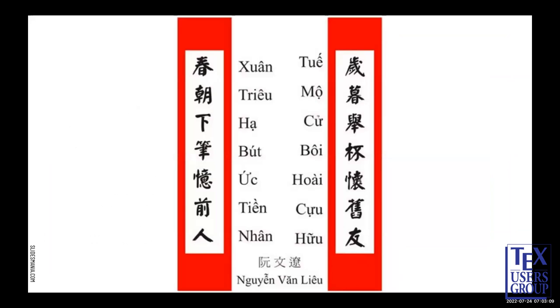As you can see from this image, the left and right banners are Zhu Han — they're just Chinese characters — and in the middle is what Vietnamese looks like today.